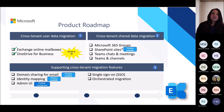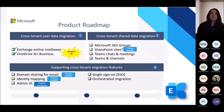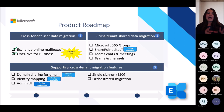Now for the roadmap. The very first thing I want to call out today is that for the first time we are officially announcing that we are releasing our product called cross-tenant user data migration to general availability by the end of this year, in partnership with SharePoint and OneDrive for Business. This release will include both cross-tenant mailbox migration and cross-tenant OneDrive migration for users.